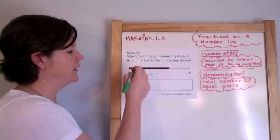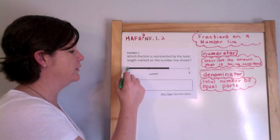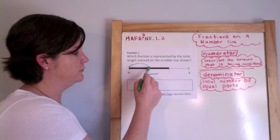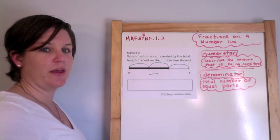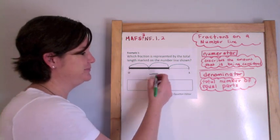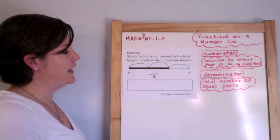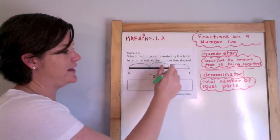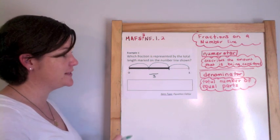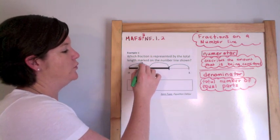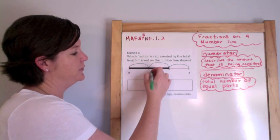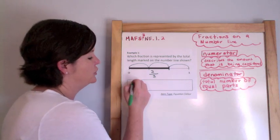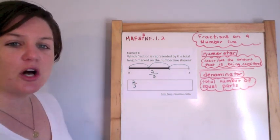Between 0 and 1, let's figure out first our denominator, the total number of equal parts. I'm going to count the hops from 0 to 1. I don't count it until I land on the next one. 1, 2, 3. There are 3 hops total. That is my total number of equal parts. And the shaded mark ends at this point right here. So how many hops does it take to get to that point? 1 hop, 2 hops. So 2 thirds. The length marked on the number line is showing 2 thirds.